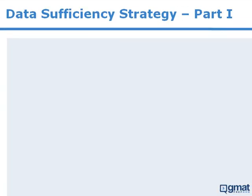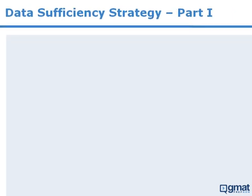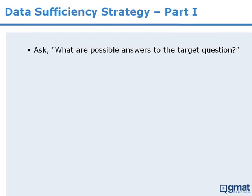In this lesson, we will examine various strategies to consider when tackling data sufficiency questions. To begin, whenever you encounter a data sufficiency question, it's often a good idea to ask: what are the possible answers to the target question? All target questions are impossible to solve without additional information. For any target question, there will be more than one possible answer. Your task is to determine whether each statement provides enough information to reduce the list of possible answers down to just one answer. So it's a good idea to know the range of possible answers before examining the statements.